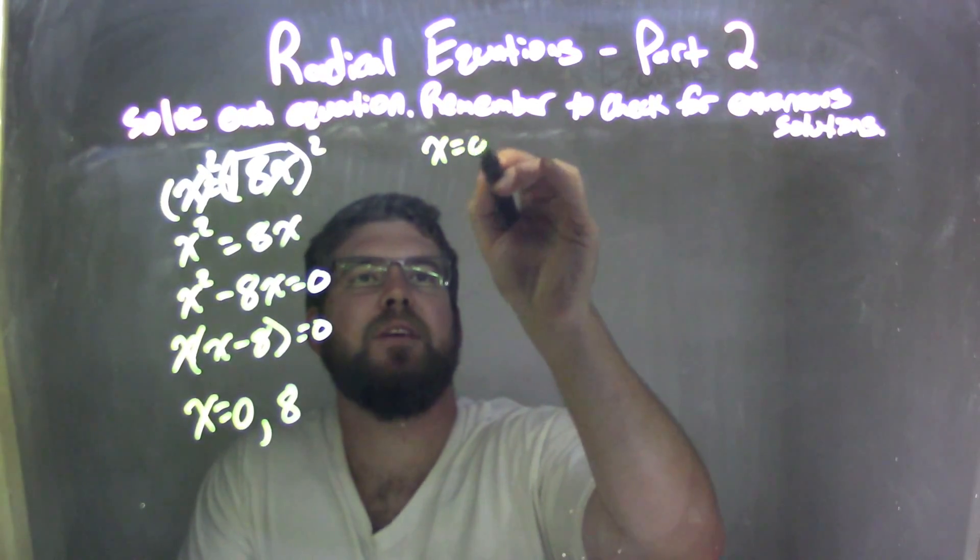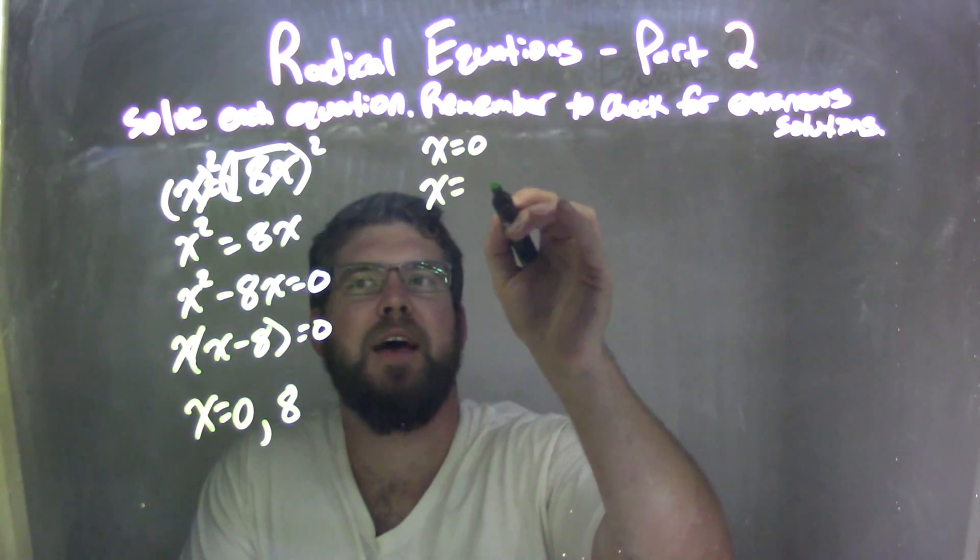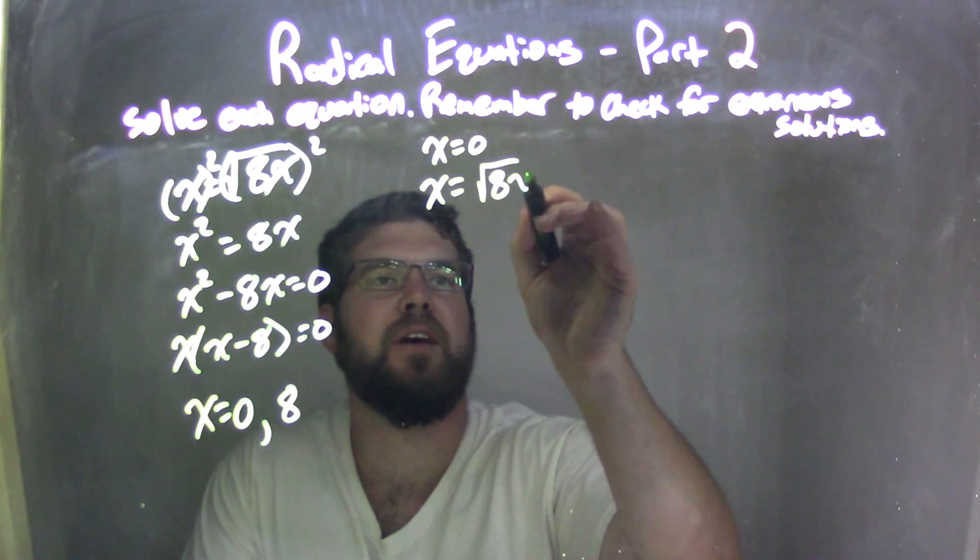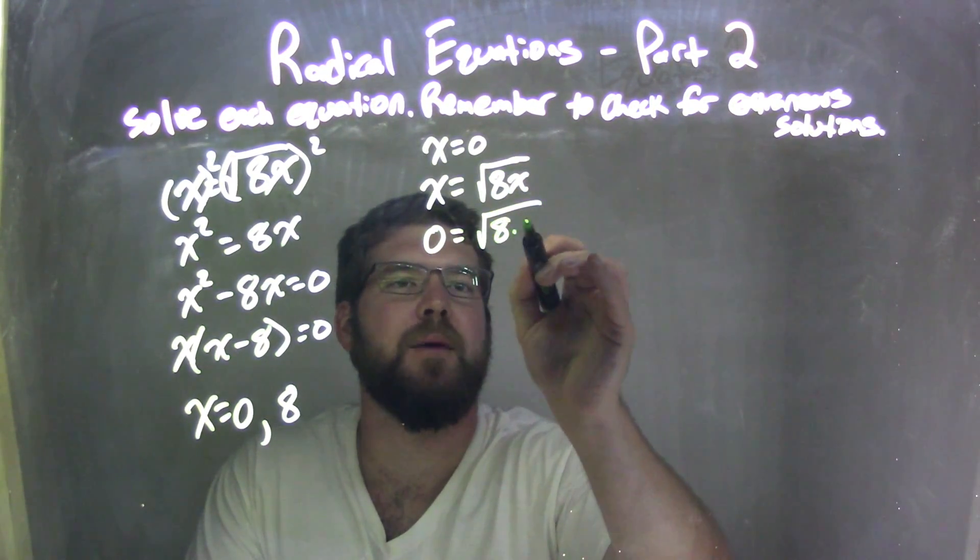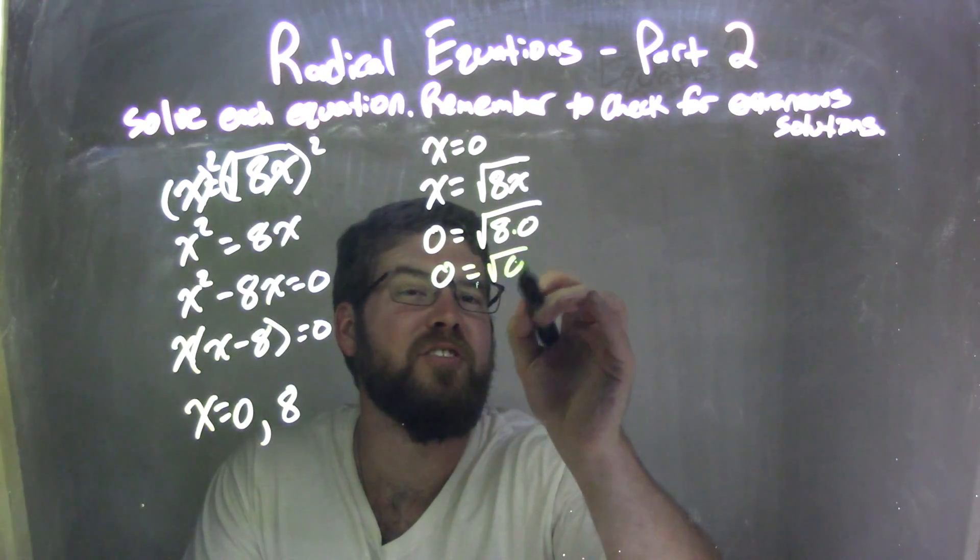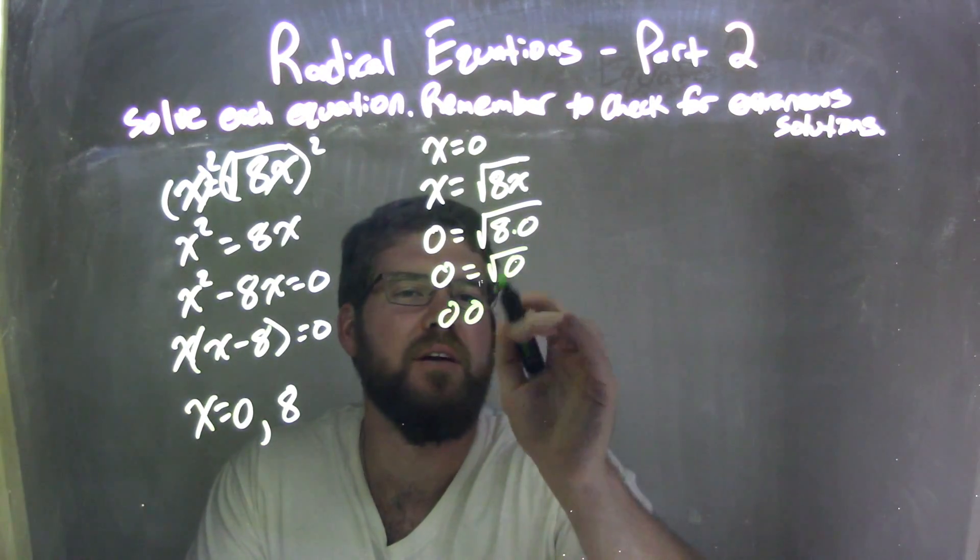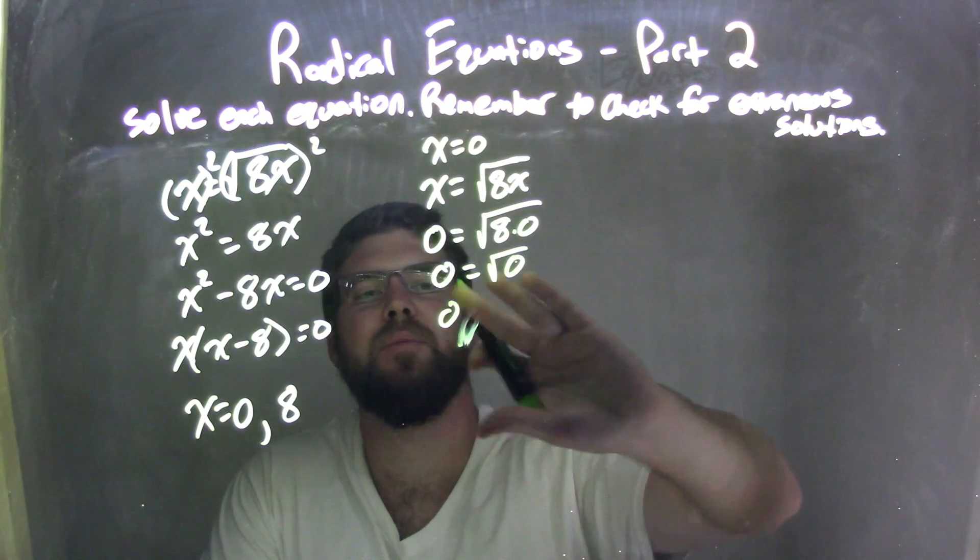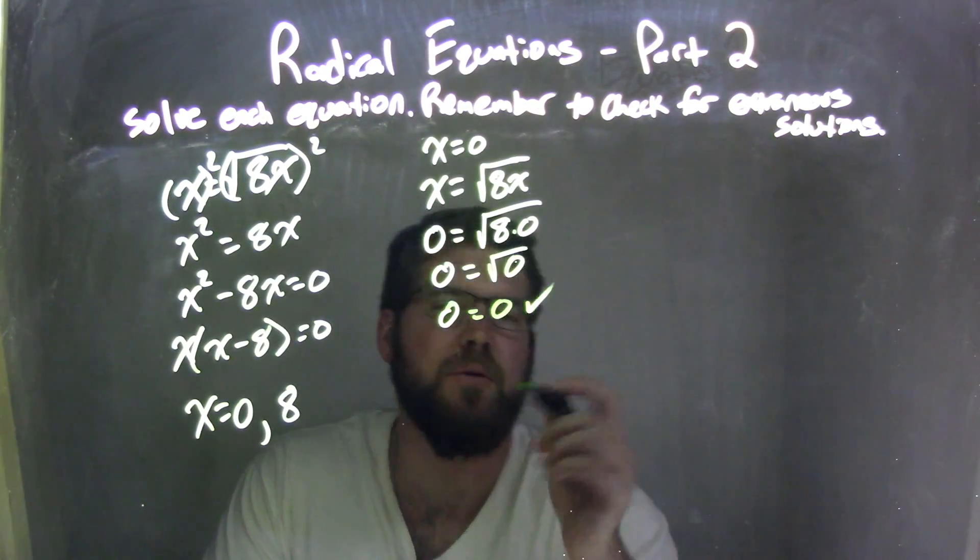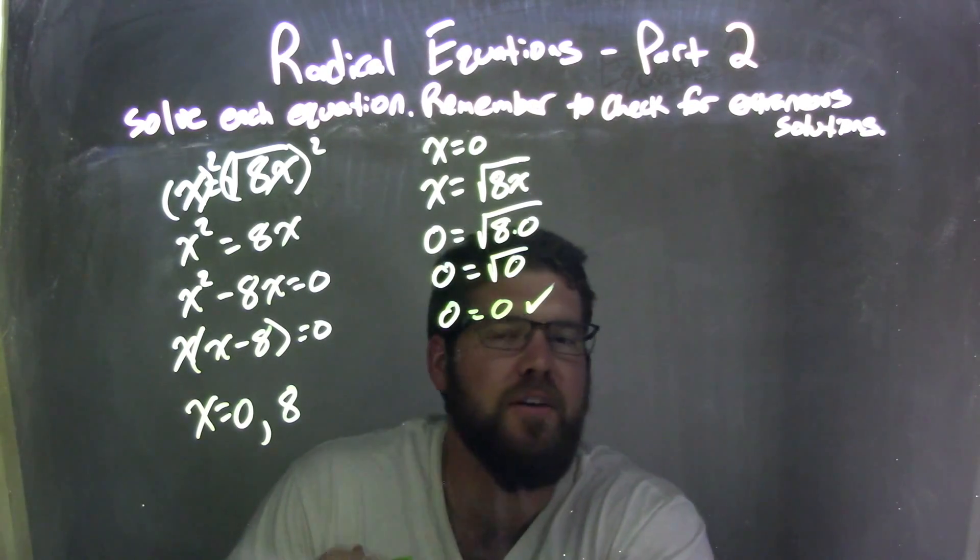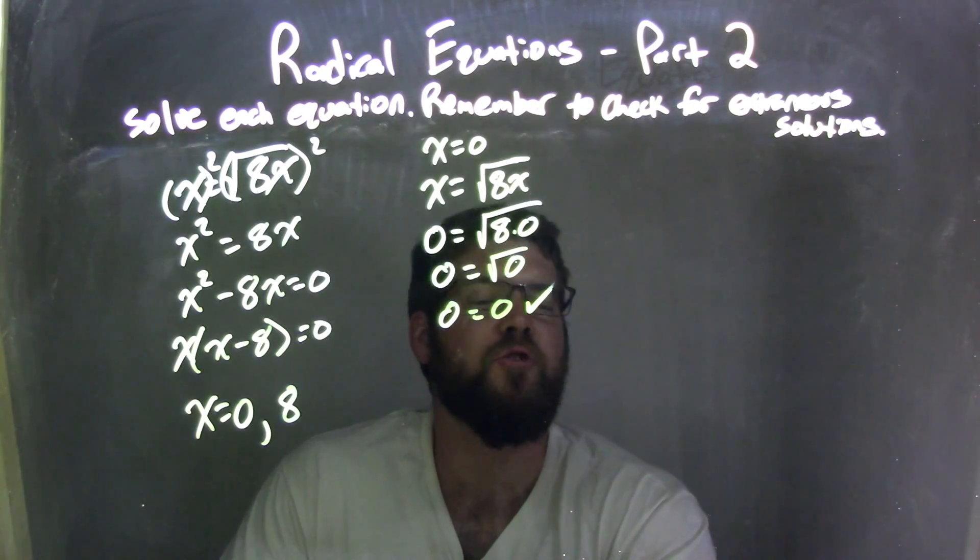Let's start with 0. So x equals 0. In our original equation, x equals the square root of 8x, let's see if this is true. Let's plug 0 in. 0 equals the square root of 8 times 0. 8 times 0 is just 0. Square root of 0 equals 0. 0 does equal 0. That's true. Fantastic. 0 is a true solution.